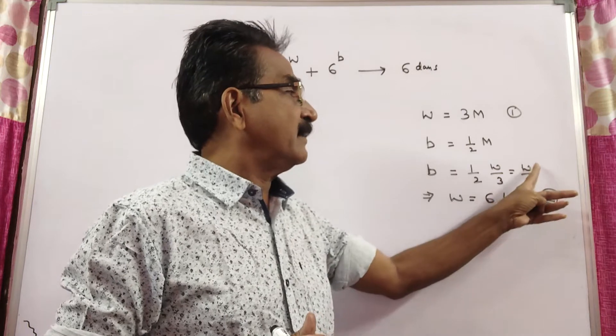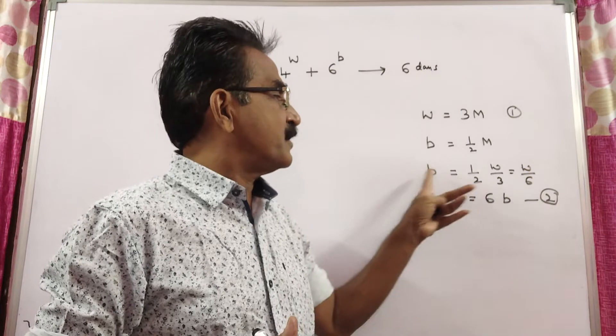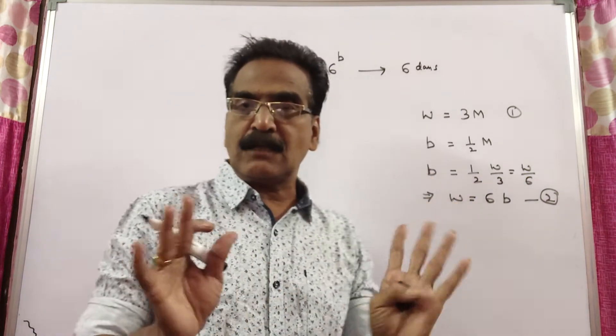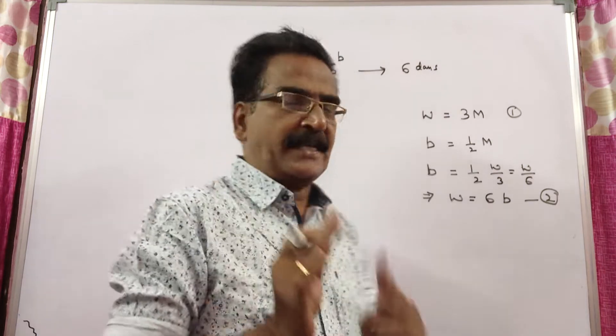So, one third of woman, that is woman by 6. It implies woman is equal to 6 into b, woman is equal to 6 boys. The capacity of woman is equal to the capacity of 6 boys.